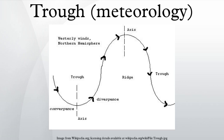Tropical waves are a type of trough in easterly currents, a cyclonic northward deflection of the trade winds. Troughs may be at the surface, or aloft, or both under various conditions. Most troughs bring clouds, showers, and a wind shift, particularly following the passage of the trough. This results from convergence or squeezing, which forces lifting of moist air behind the trough line.